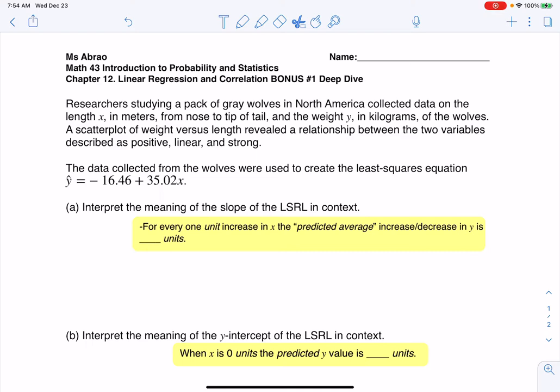A scatterplot of weight versus length revealed the relationship between the two variables described as positive, linear, and strong. Just taking a look at this, I can see a couple of things. I see one numerical variable here and a different numerical variable here. I'm going to just take note that I have two numerical variables.